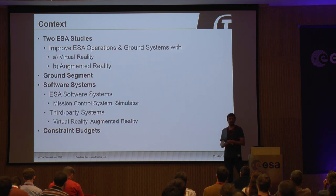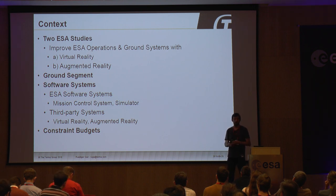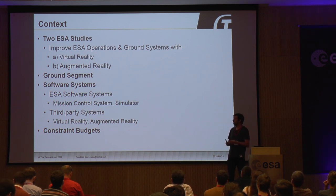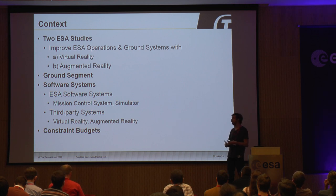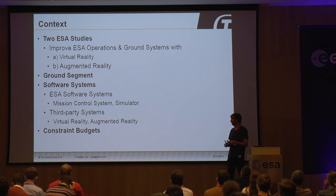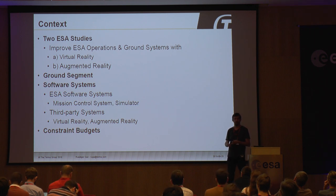In context, these are two ESA studies — one about virtual reality, the other about augmented reality — and the scope was ESA operations in the ground systems. Our job as a company was to help ESA identify opportunities for using virtual reality and augmented reality in the ground segment. We had to deal with different software systems: on one hand, ESA software systems — classical mission control systems, simulators — which are well established at ESOC where we did the study, with the European Astronaut Center also participating. But we also had third-party systems: virtual reality, augmented reality. Outside the space community, standards like CCSDS, PUS, or ESCC are fairly isolated — those third-party vendors don't know anything about them.